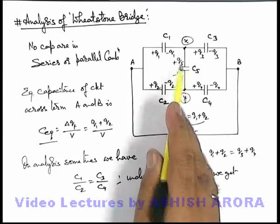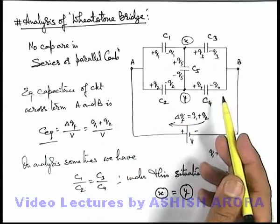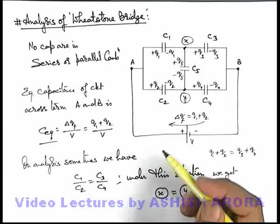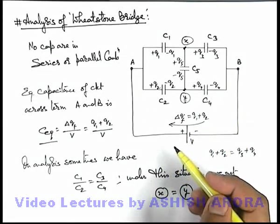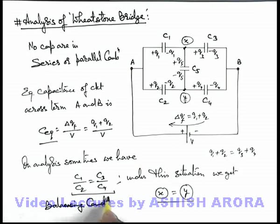You can even ignore it or remove from the circuit without any loss, in the situation it'll remain as it is. Still the charge flown through the battery, energy stored and all other parameters will remain as it is. This is the situation which we call balanced or balancing condition of Wheatstone Bridge.